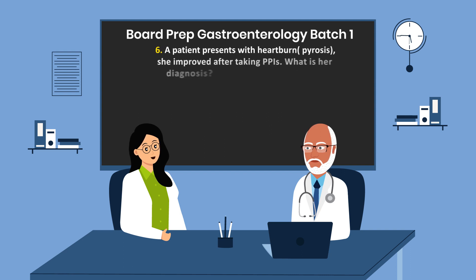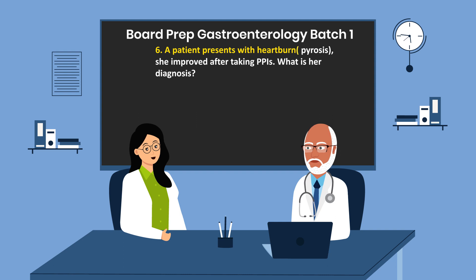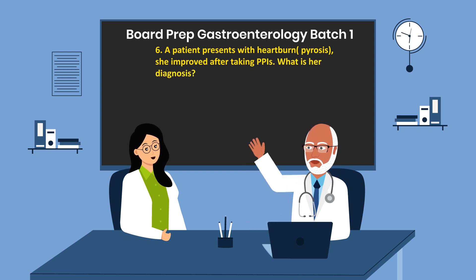Question 6. A patient presents with heartburn, which is otherwise known as pyrosis. She improves after taking proton pump inhibitors, known as PPIs. What is her diagnosis? GERD, which is gastroesophageal reflux disease.